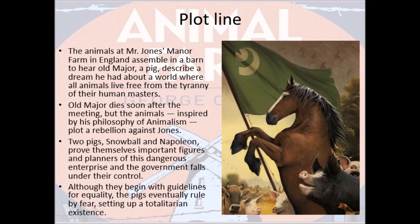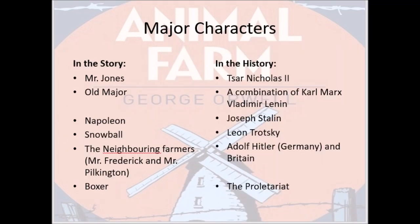Under the leadership of two powerful pigs — Snowball and Napoleon — the animals succeed in the rebellion. But since the pigs led the rebellion, they become the most powerful masters of the farm after Mr. Jones is ousted. Although they begin with guidelines for equality, liberty, and freedom, the pigs eventually rule by fear, setting up a totalitarian existence. This mostly applies to Napoleon, who gains the upper hand through manipulative skills and becomes addicted to power.